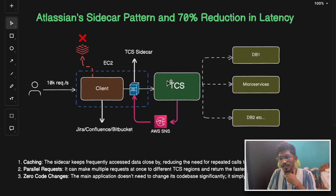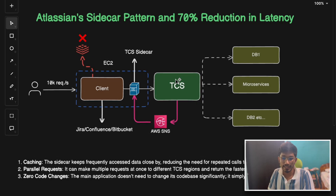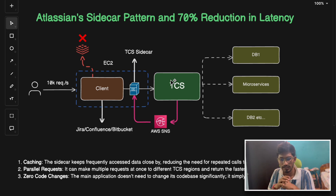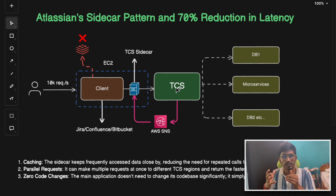The main problem lied in the multiple calls being made to the TCS service, known as the Atlassian Tenant Context Service. This TCS service was responsible for managing user data across various regions — Europe, Asia, Australia, and so on. Each time a user interacted with any app like Jira, Confluence, or Bitbucket, the TCS had to process literally tens of thousands of requests per second.